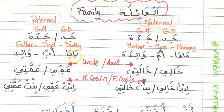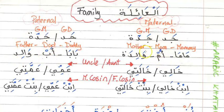For dad: baba is like 'daddy,' ab is like 'dad,' and walid is 'father.' An important thing to remember about possession — saying 'my' — you are only flexible with ab and walid, and similarly um and walida.